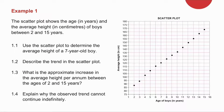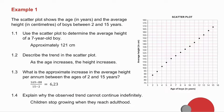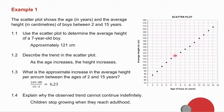Example number one. I want you to pause the video, try this example, and then we'll do it together. The example shows a scatter plot of the age of boys in years and the average height in centimetres. The first question asks you to use the scatter plot to determine the average height of a seven-year-old boy. When you're reading off like this, your answers are going to be fairly approximate. For seven years old, if I go up and across from that point, I get approximately 121 centimetres.